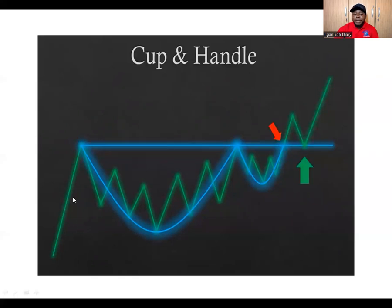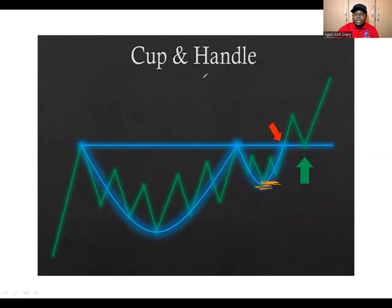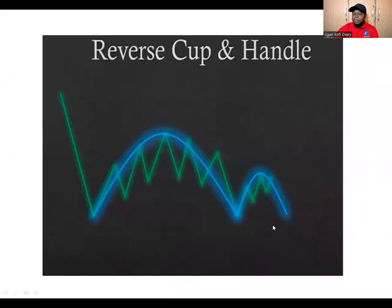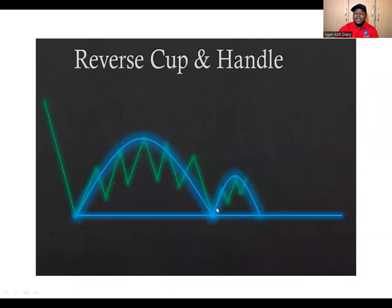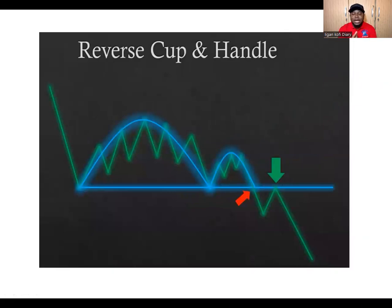When it comes to the cup and handle, once you see this pattern and the breakout with a retest, this is your format of entry. The end of the handle is your stop loss; two or three times that is your take profit. We also have the bearish cup and handle — the same concept but inverted. Once there's a breakout and a retest you can take your sell. All these patterns we've talked about are continuation patterns.